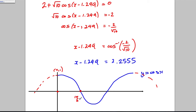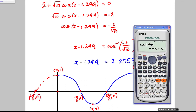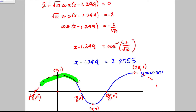Drawing the cosine graph between roughly -π/2 and 2π to find all solutions in range: 2.2555 is less than π (≈3.14), so it's between π/2 and π on the cosine curve. There's one symmetric solution on the other side. Measuring the distance from π/2: 2.2555 - π/2 ≈ 0.6548, so the second solution is 3π/2 - 0.6548 from the x - 1.249 equation.